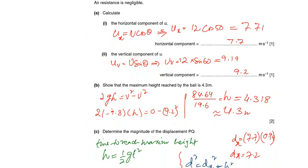So g is minus 9.8, h is what we need. Final vertical component is 0, initial is 9.2. By equating and solving, h equals 4.31. Rounding to two significant figures gives 4.3 meters.